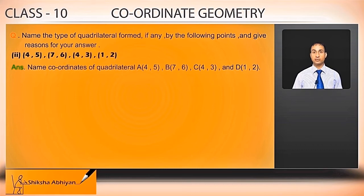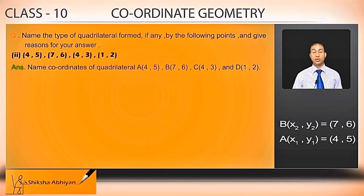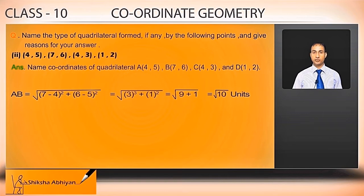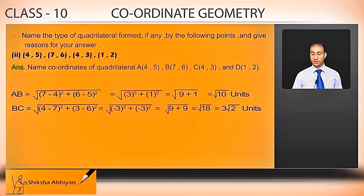We will find all four side distances and also the diagonals. Distance AB: taking B(7,6) as (x2,y2) and A(4,5) as (x1,y1), distance equals under root of (7 minus 4) squared plus (6 minus 5) squared, which is root of 3 squared plus 1 squared, equal to root of 9 plus 1, that is root 10 units.